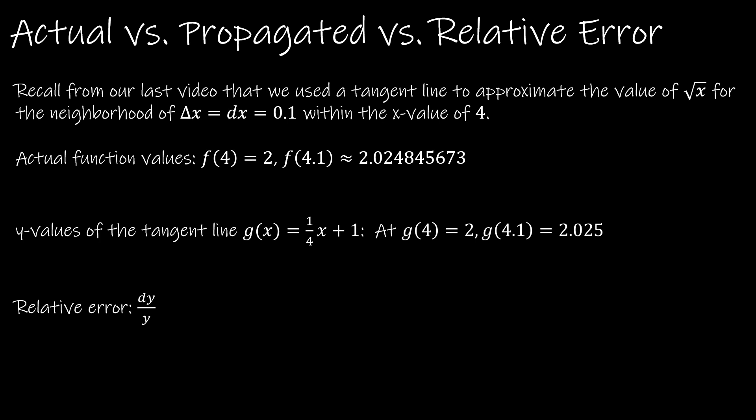In our last video, we used a function y equals radical x, and we said within a neighborhood of delta x — which was the same as dx — of 0.1, at the x value of 4. We went through the whole example showing the actual function values: f of 4 is 2, f of 4.1 is 2.0248, etc. The measurement error is within 0.1, but the propagated error would be the difference between those.